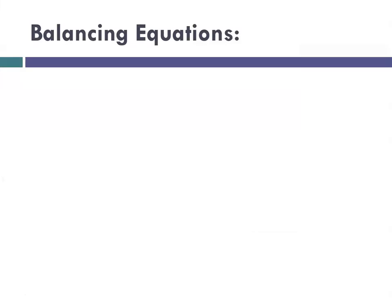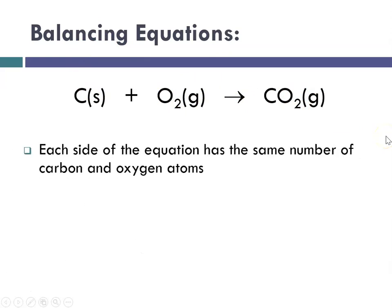So now let's look at a couple examples. So here I have carbon, solid at room temperature, plus oxygen, gas at room temperature, react to produce carbon dioxide. And if we look, we see that there is one carbon on each side, carbon, carbon, and two oxygens, two oxygens. And so since each side of the equation has the same number of carbon and oxygen atoms, we would call that balanced.